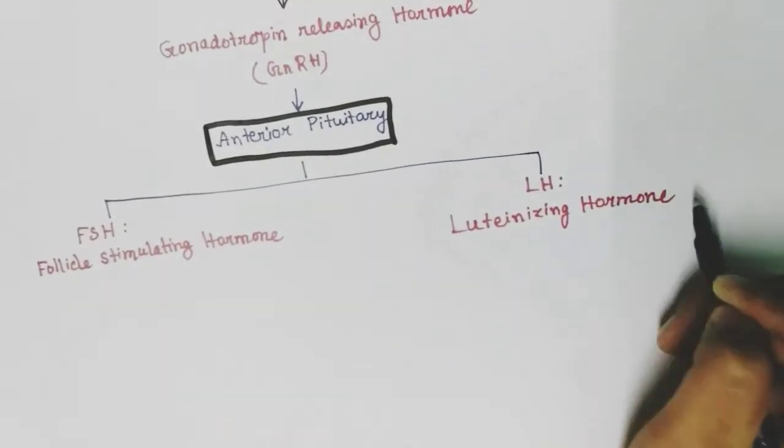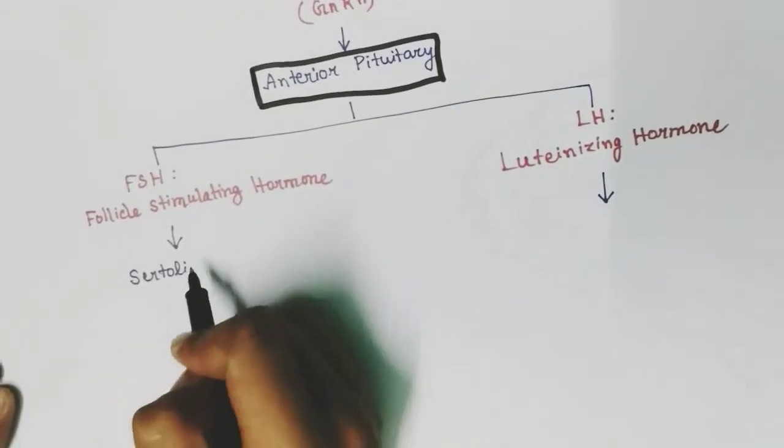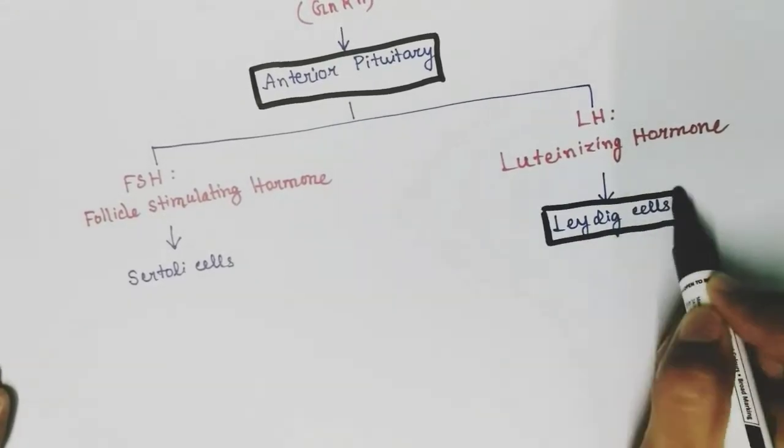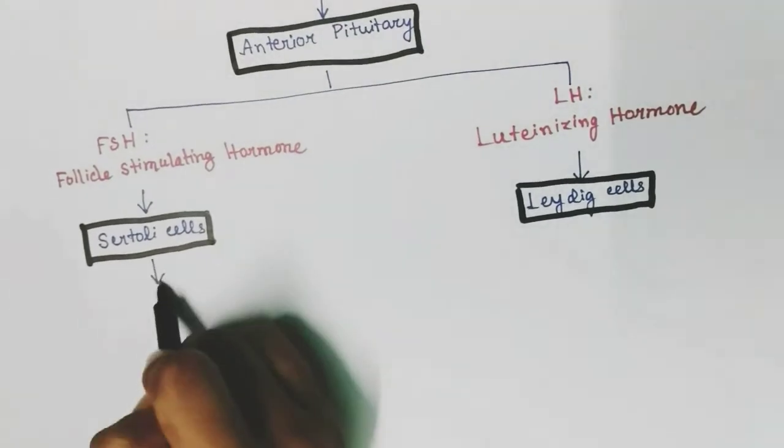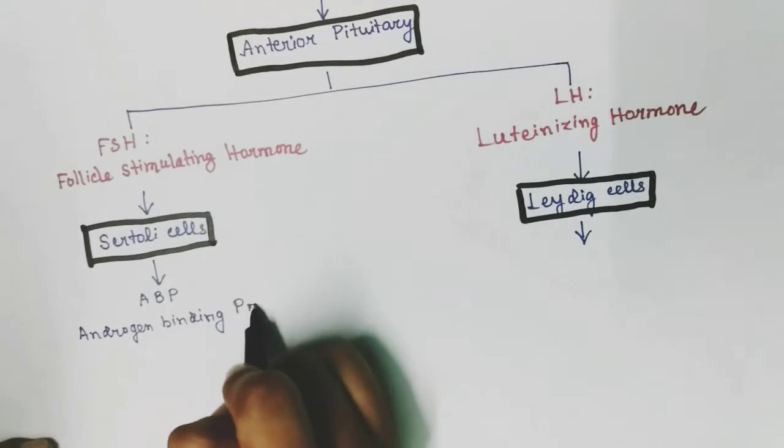These hormones have different effects on different cells. FSH has its effect on sertoli cells and LH has its effect on leydig cells. By the effect of FSH hormone on sertoli cells, sertoli cells release ABP or androgen binding protein.